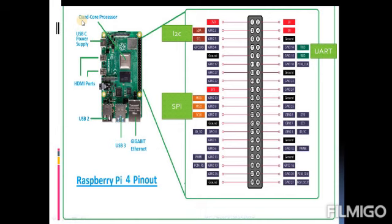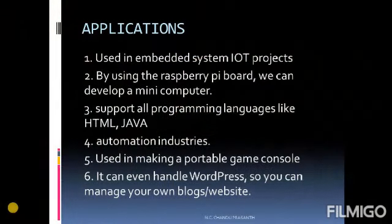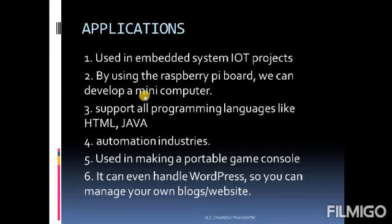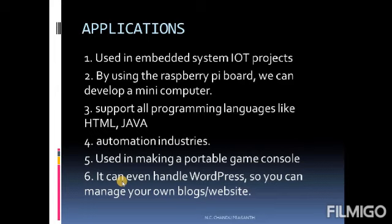The Raspberry Pi 4 mainly consists of a 1.5 GHz quad-core processor. These are used in embedded system IoT projects. By using the Raspberry Pi 4 board, we can develop a mini-computer — its size is just like a credit card. It supports all programming languages like Python, Java, and HTML. It is used in automation industries and portable gaming console applications, and it can even run WordPress so you can manage your own blogs and websites easily.